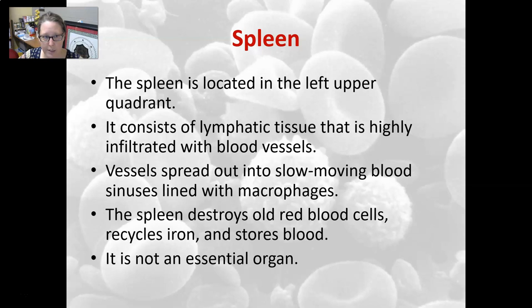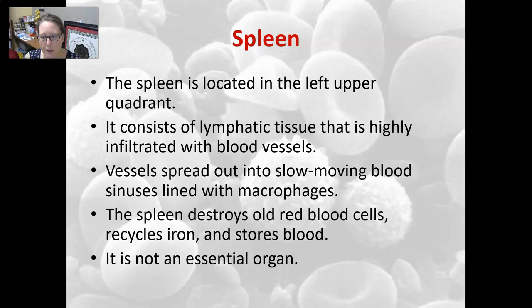The spleen is located in the left upper quadrant, tucked next to the stomach. It consists of lymphatic tissue highly infiltrated with blood vessels, so the spleen cleans your blood circulation. Blood flows through slow-moving blood sinuses lined with macrophages, where old red blood cells are removed and their iron is recycled. The spleen is not an essential organ; if removed, macrophages in the liver and other locations take over its function.